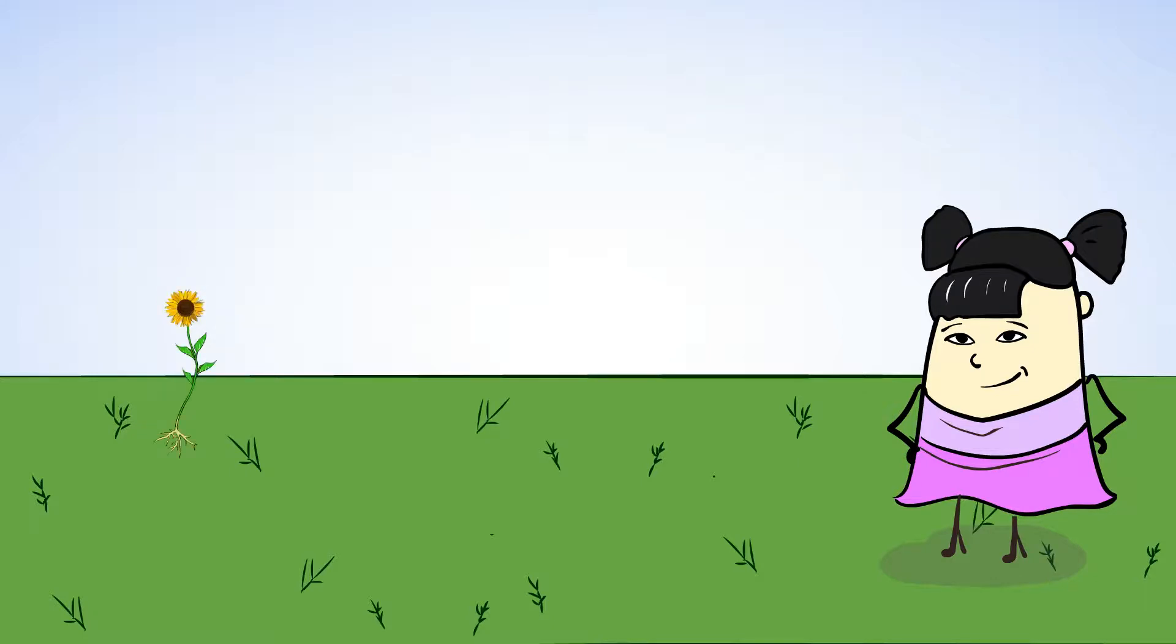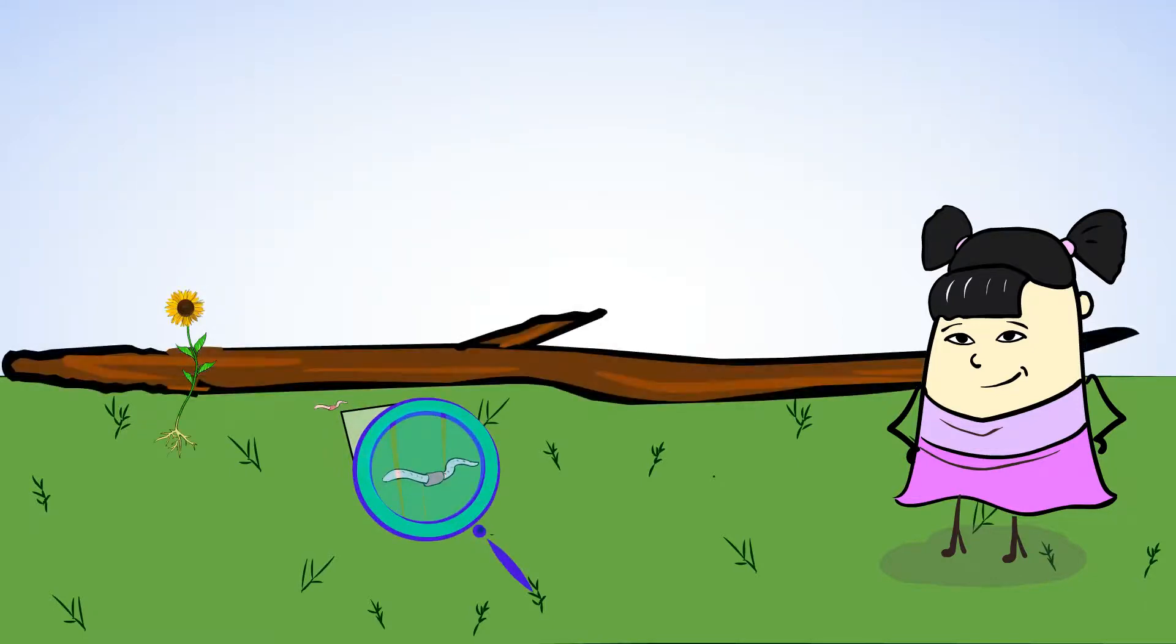Here's a sunflower, an earthworm, and a really large stick. Sue already measured all of these items, but forgot which measurement went with which. Let's use our estimation skills to help her out.